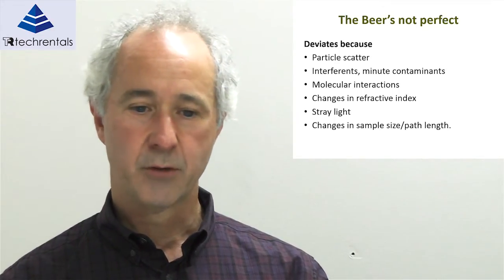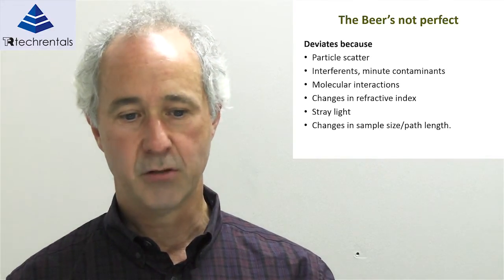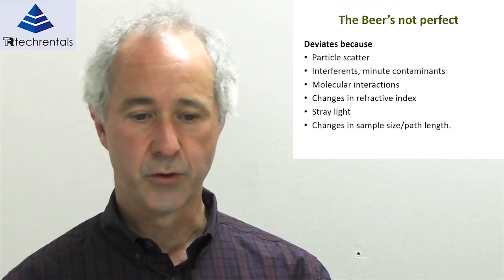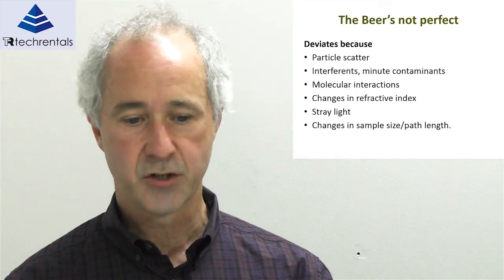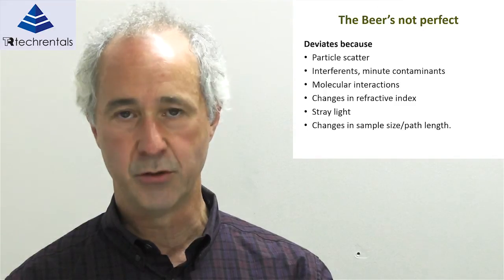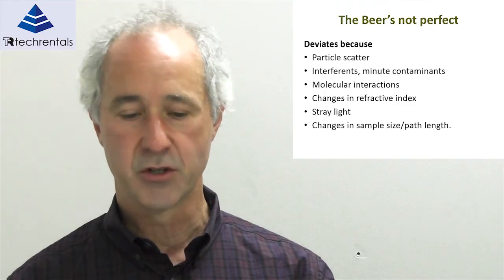Unfortunately, Beer's Law is not perfect. It can deviate from its ideal state due to particle scatter, interference from contaminants in the material, molecular interactions, changes in refractive index, stray light, and changes in sample size and path length. Many of these can be compensated for to a certain extent. The last factor — changes in sample size and path length — is particularly important to control when measuring material inline.